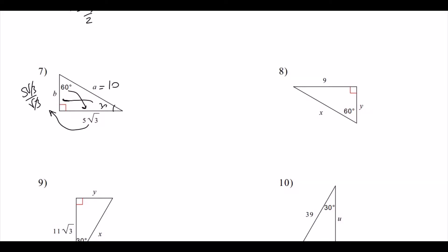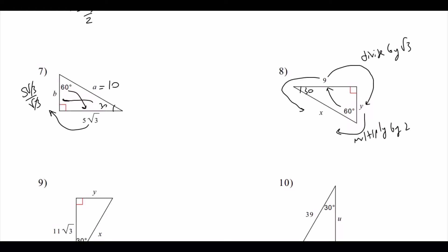Problem 8: given across 60°. From 60° to 30°, divide by √3; from 30° to hypotenuse, multiply by 2. So 9 divided by √3, rationalized by multiplying top and bottom by √3, gives 9√3/3 = 3√3. The hypotenuse is double that: 6√3.